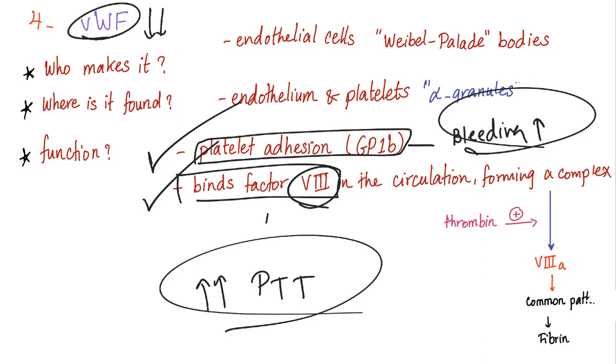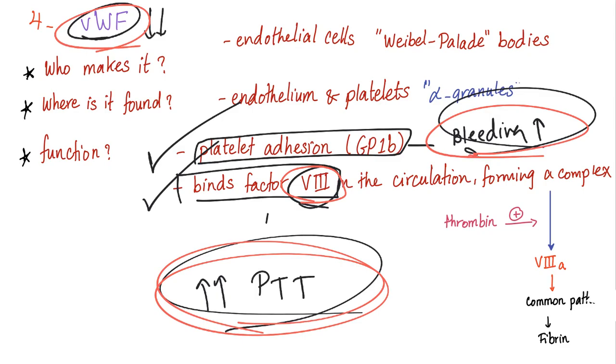This is very important. Do you want another question? How to differentiate between hemophilia A, which is a defect in factor VIII, and von Willebrand disease only by using lab? The answer is bleeding time, because both hemophilia A and von Willebrand disease prolong the PTT, but only the von Willebrand disease prolongs the bleeding time.